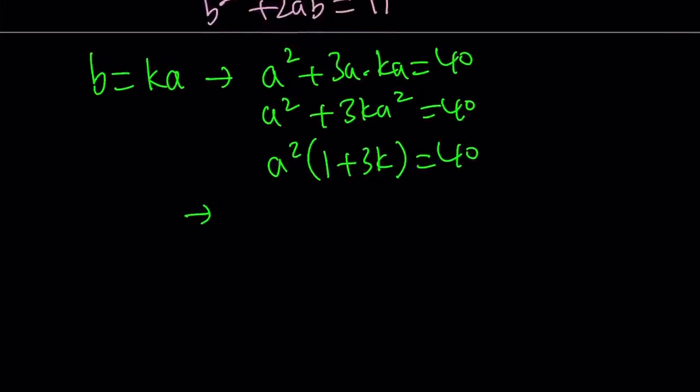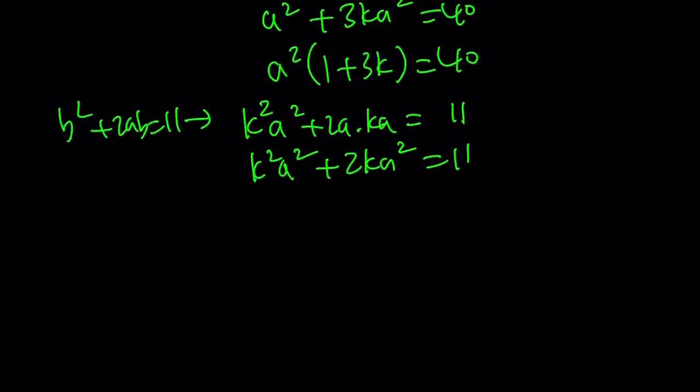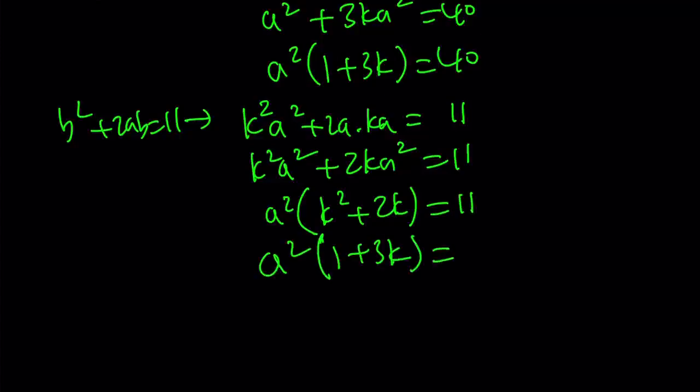Let's do it one more time for the other equation. b squared plus 2ab equals 11. Now we're replacing b with ka. So k squared a squared plus 2a times ka equals 11. This is k squared a squared plus 2ka squared equals 11. If you take out a squared like before, you get k squared plus 2k equals 11.